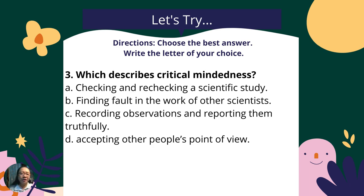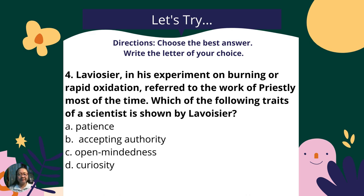Number three: which describes critical mindedness? A — checking and rechecking a scientific study; B — finding fault in the work of other scientists; C — recording observations and reporting them truthfully; D — accepting other people's point of view. Number four: Lavoisier in his experiment on burning or rapid oxidation referred to the work of Priestley most of the time. Which of the following traits of a scientist is shown by Lavoisier? A — patience; B — accepting authority; C — open-mindedness; D — curiosity.